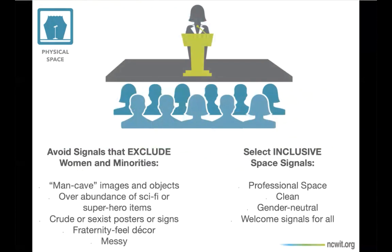The first element is physical space. You might be surprised to know that physical space is important in communication. The objects, signage, and decor within an environment can signal who does and who does not belong, what kind of culture and values the inhabitants have, and what kind of behaviors are likely to happen there. These environments may be formal spaces such as lecture halls and classrooms or department offices, or they may be more informal, such as hallways, break rooms, or even the spaces outside of buildings. Research has shown that environmental cues that reflect the white male-dominated technology stereotype can make minorities, including women, feel pretty uncomfortable. These include typical man-cave images and objects like geeky sci-fi or superhero objects, crude posters, frat-style decor, and general uncleanliness, as opposed to more professional, clean, gender- and race-neutral environments that signal that all are welcome.